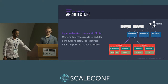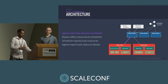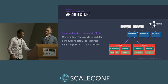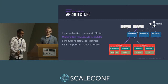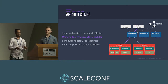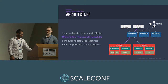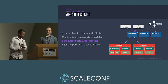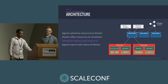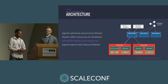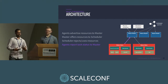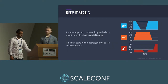The basic premise of Mesos: agents advertise resources to the master. The master takes these and offers them to a scheduler in a fair way so each scheduler gets a fair proportion. The scheduler says whether it wants those resources or not. The master communicates the task information down to the actual machine doing the work. Once the application is up and running, the agent reports the task status back to the master and our application is running.